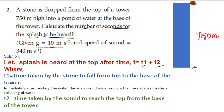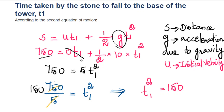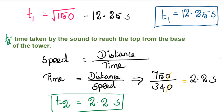The initial velocity U is 0, since the stone is simply dropped from rest. Substituting into the equation, with S = 750 meters: 750 = ½ × 10 × T1², which gives 750 = 5T1². So T1² = 750 ÷ 5 = 150. Taking the square root, T1 = 12.25 seconds.